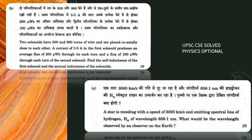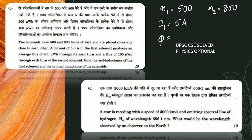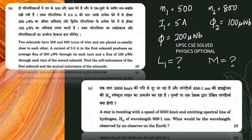We are given two solenoids: the first solenoid has 500 turns and the second solenoid has 800 turns. They are placed coaxially close to each other. The current flowing through the first solenoid is i1 = 5 ampere. The flux through the first solenoid is 200 micro-weber and through the second is 100 micro-weber. We need to find the self-inductance L1 of the first solenoid and the mutual inductance of the two solenoids.